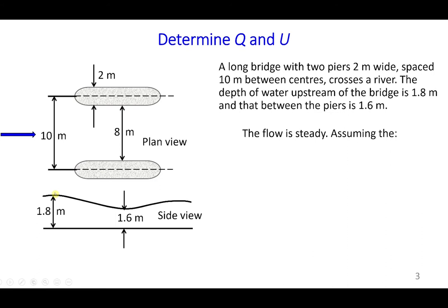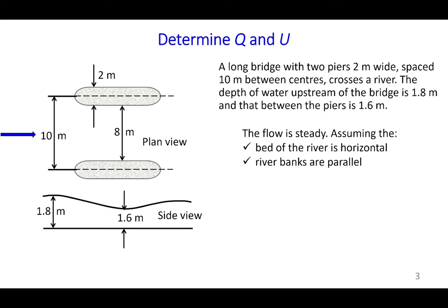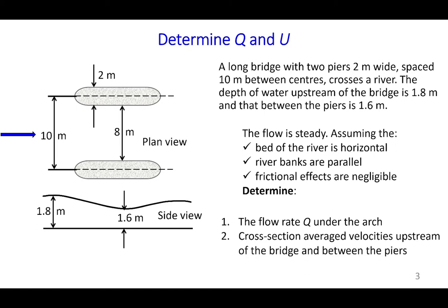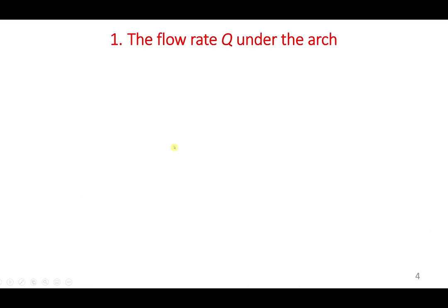The flow is steady, meaning the flow rate is constant and does not change with time. We assume that the bed of the river is horizontal, the river banks are parallel, and frictional effects are negligible. We need to determine the flow rate under the arch and also the cross-section averaged velocities upstream of the bridge and between the piers.